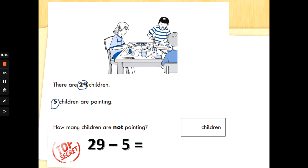Five fingers up and let's count back to subtract. 29, 28, 27, 26, 25, 24 children. Well done.